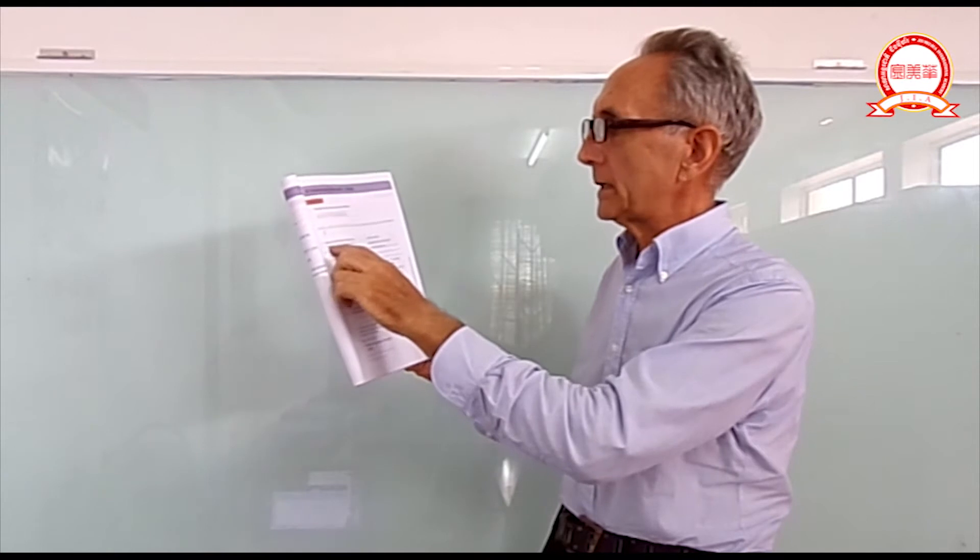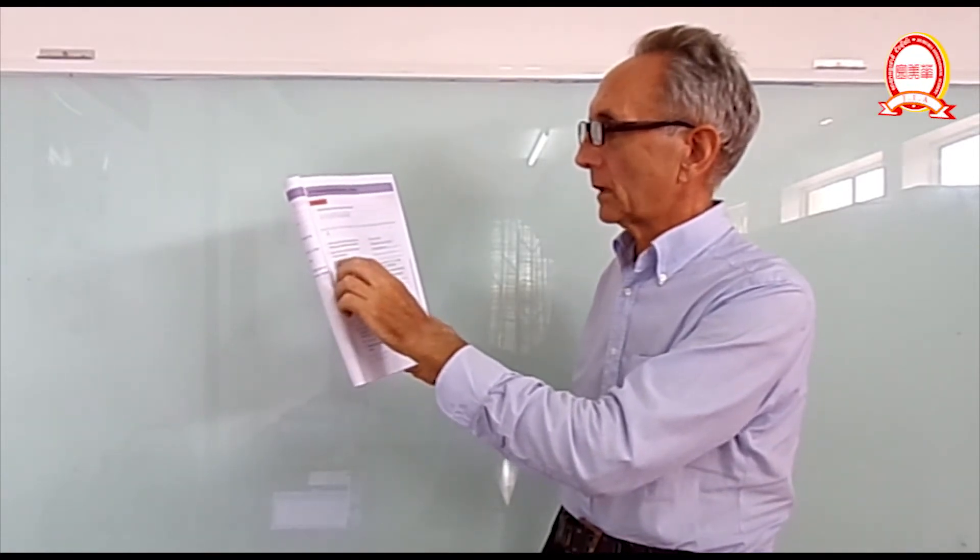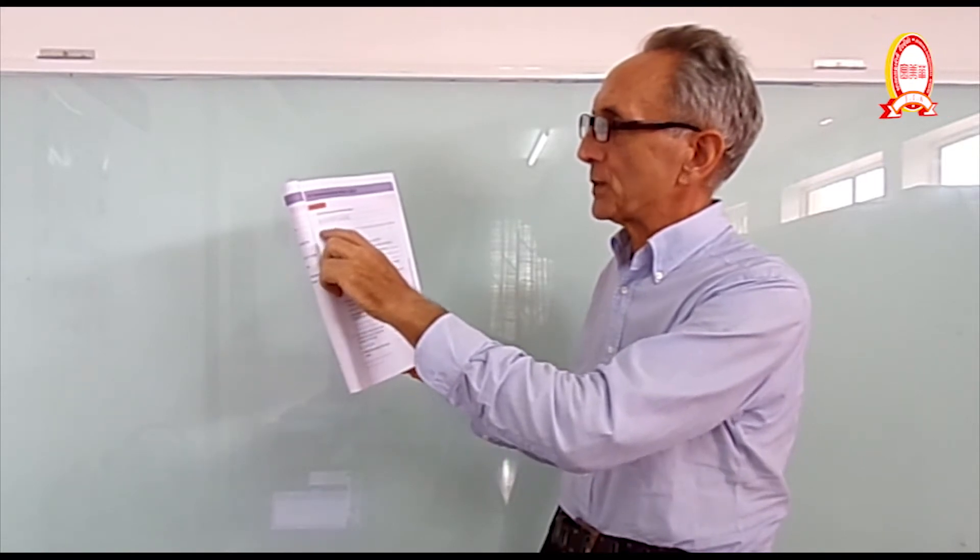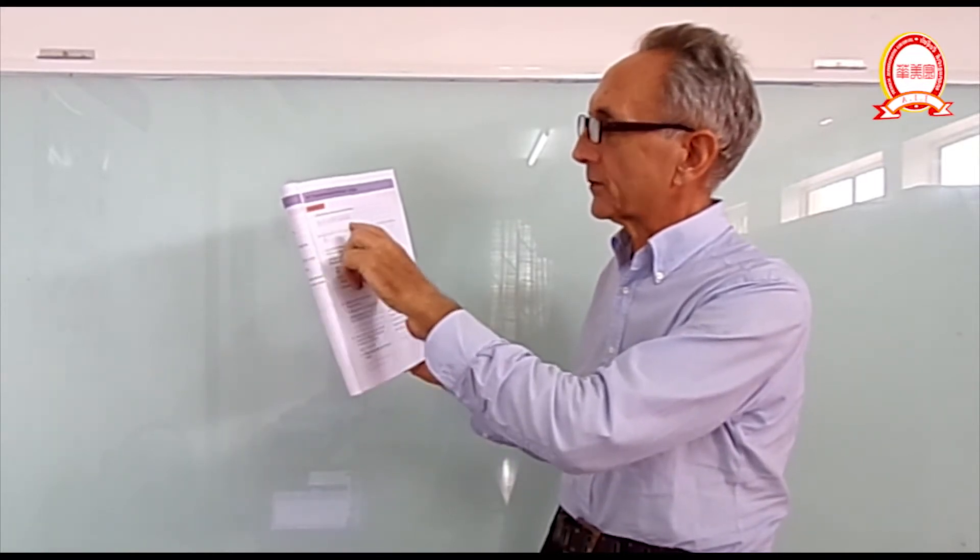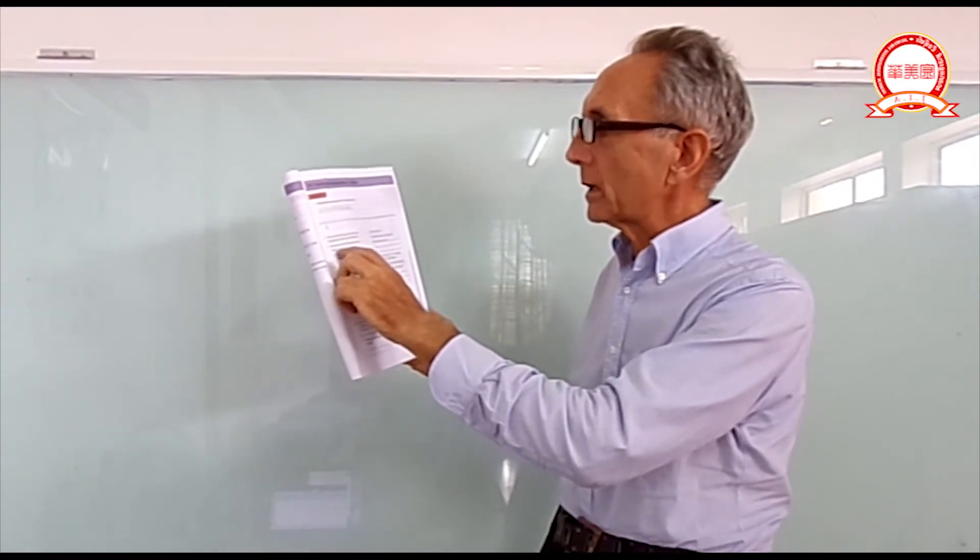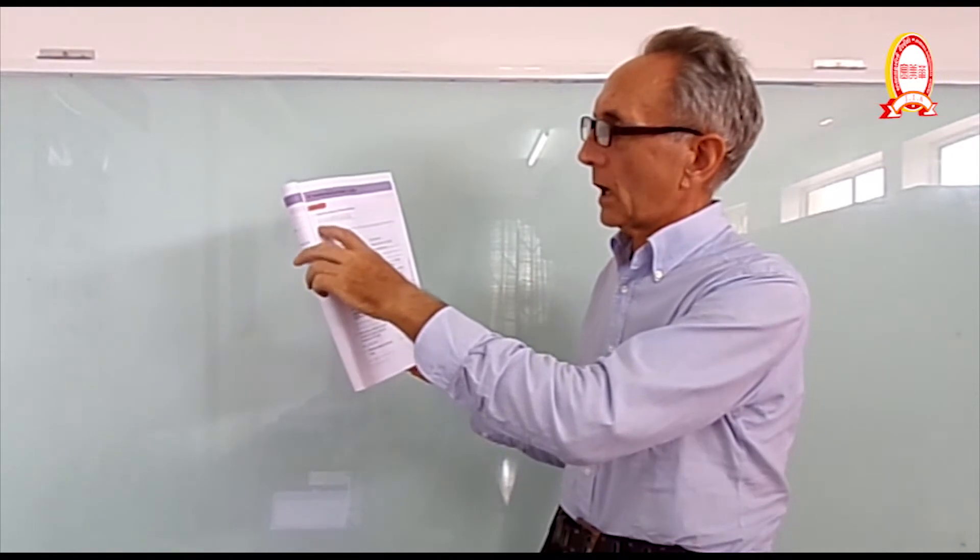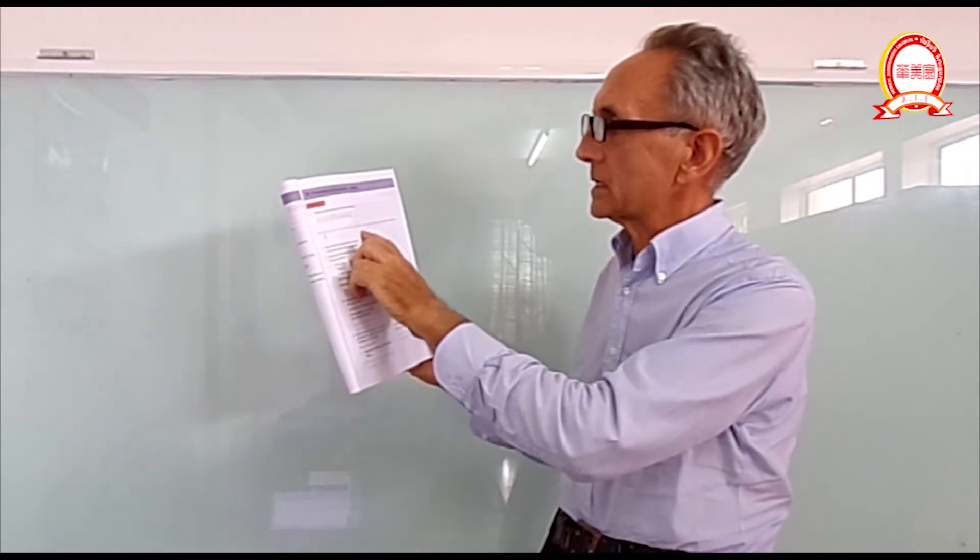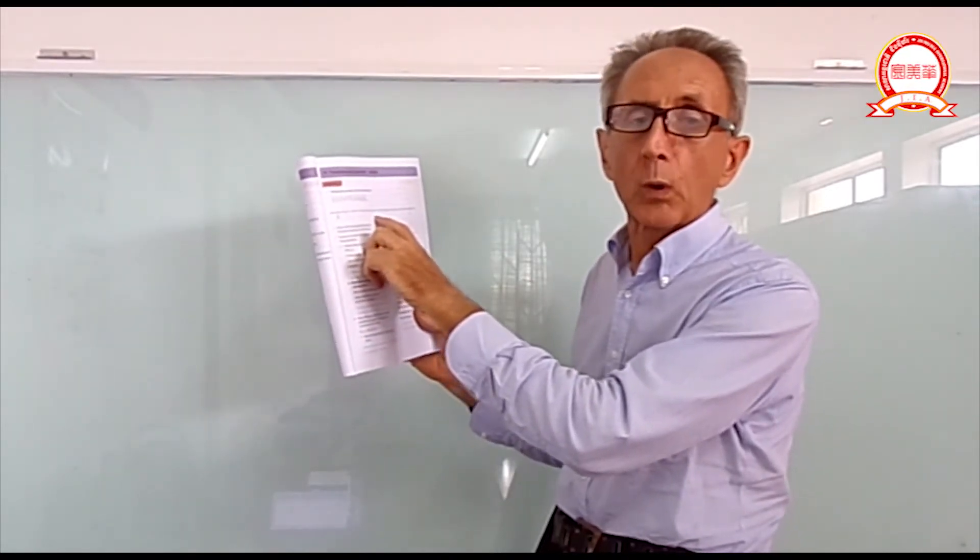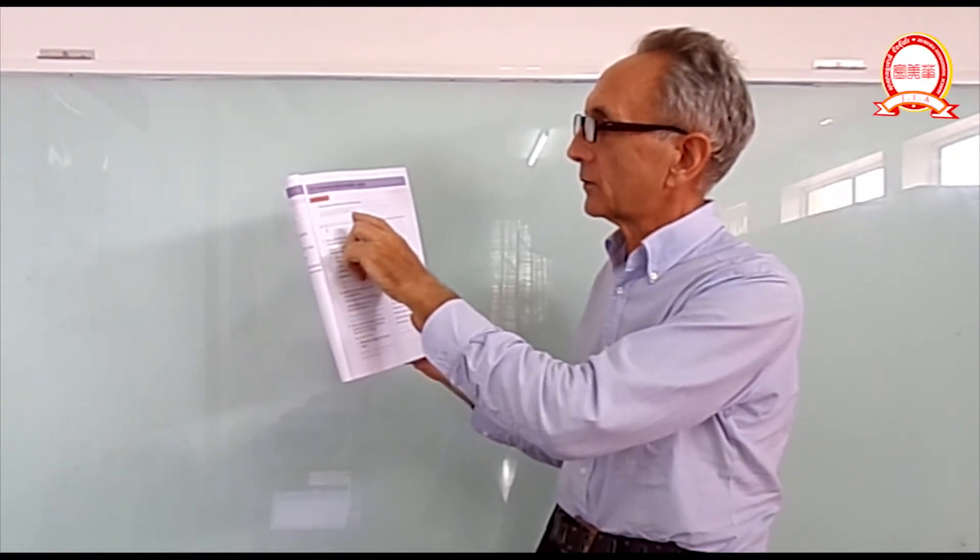Now write the equivalent decimal fraction under the number line. So you were supposed to be writing the fractions above the line. Now you write the decimals below the line. So half is 0.5. So you write that there. Then you do the same thing for all these other things.